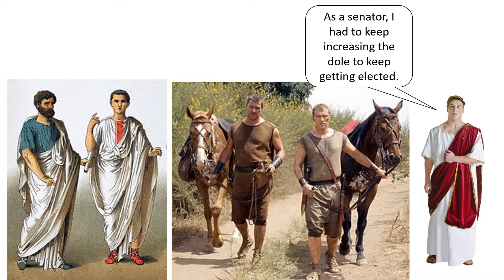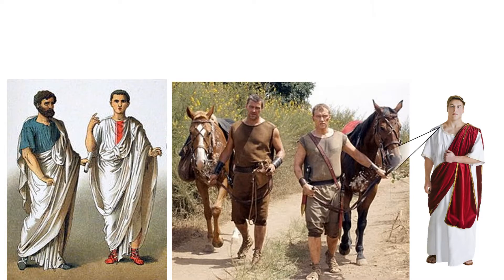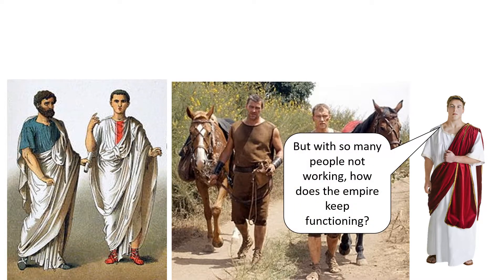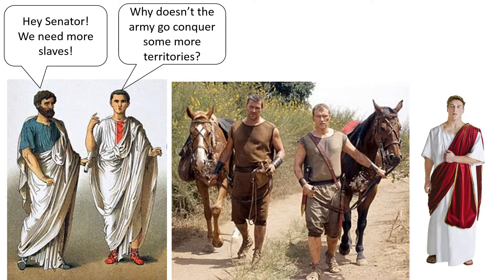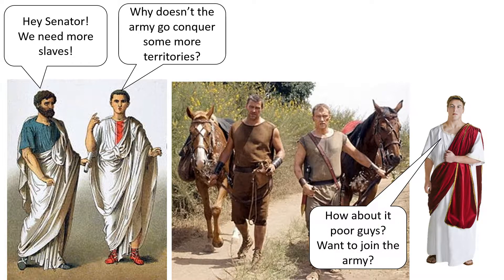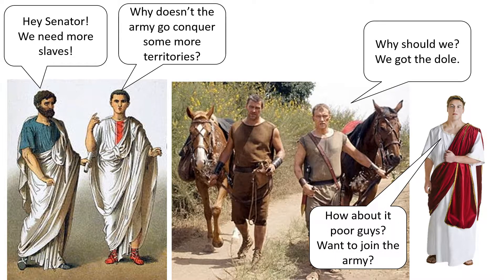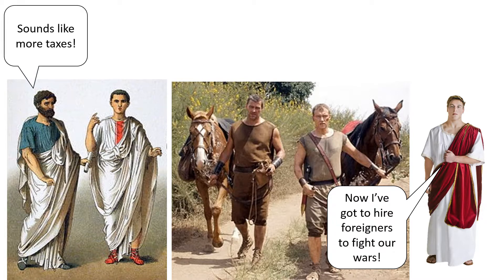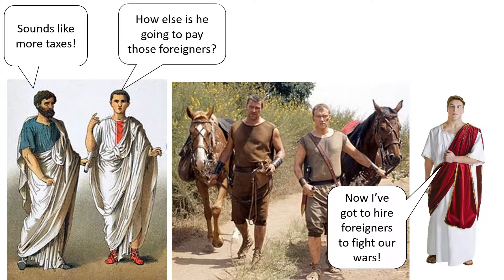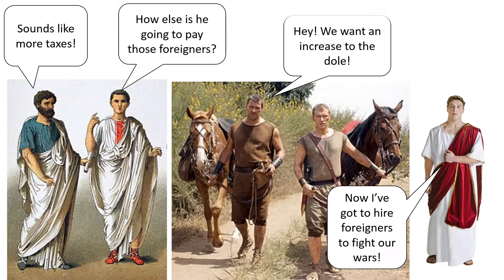Senators had to keep increasing the dole to get elected. But with so many people not working, how does the empire keep functioning? The army needed more slaves, suggesting conquering more territories. But poor citizens had no incentive to join the army when they had the dole. So the senator had to hire foreigners to fight Rome's wars — which meant more taxes to pay those foreigners, while citizens demanded even more dole.